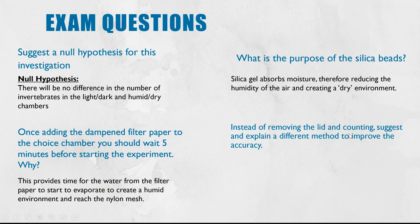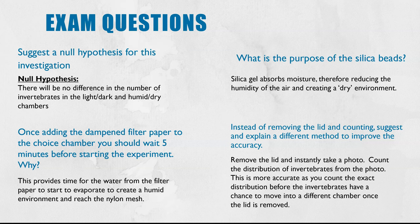Instead of removing the lid and counting the invertebrates, suggest and explain a different method to improve the accuracy. This links to what I said earlier: you'd take the lid off, take a photo straight away and then count the distribution from the photo. Then we have to explain why that is more accurate and that is because the invertebrates won't have a chance to move around into a different chamber once the lid is removed, so you are getting the exact results from each of those chambers before the lid is taken off and light can then go to all of the sections.